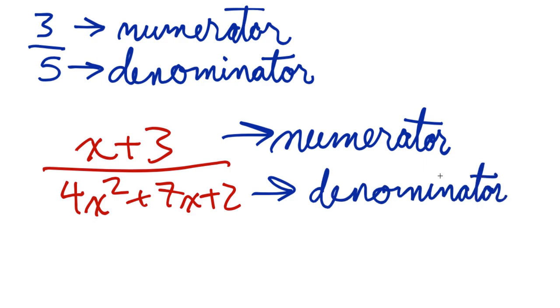So even though when we switch from fractions like three-fifths to rational expressions like x plus three over four x squared plus seven x plus two, still have a numerator and denominator.